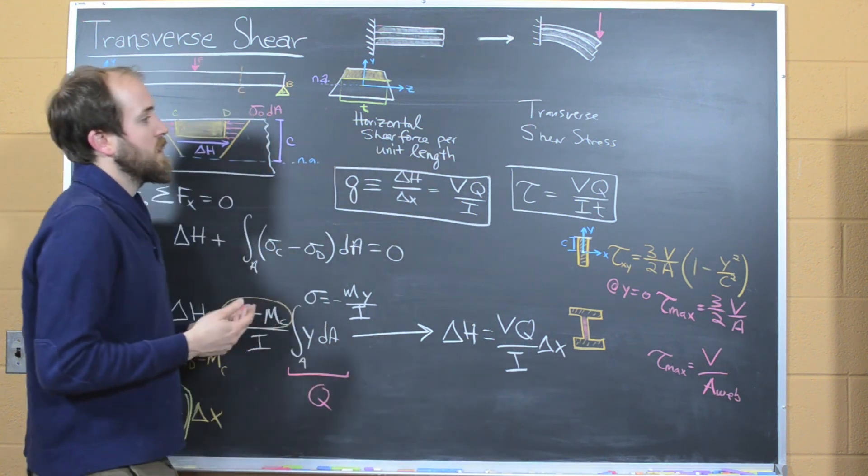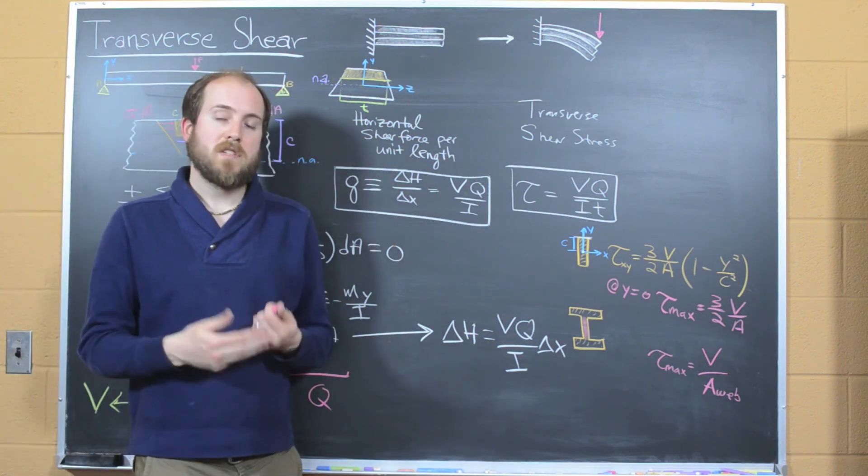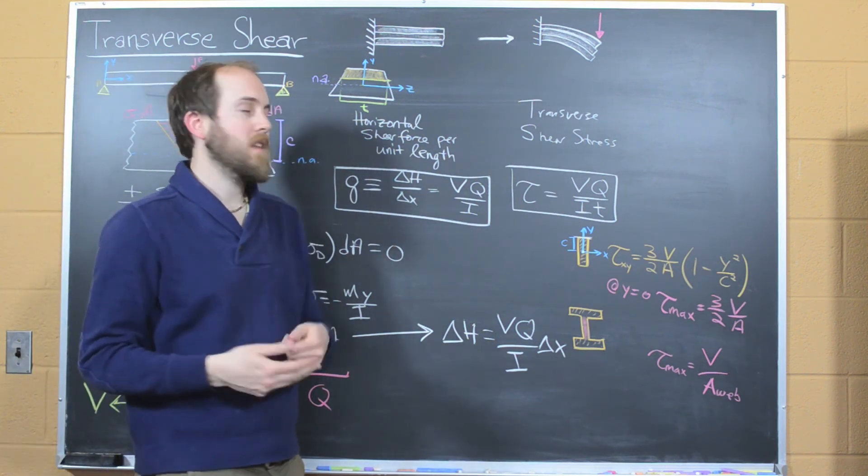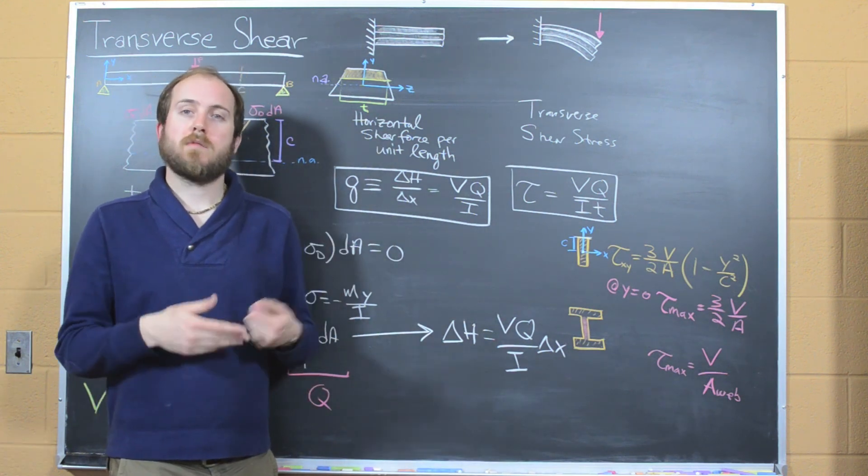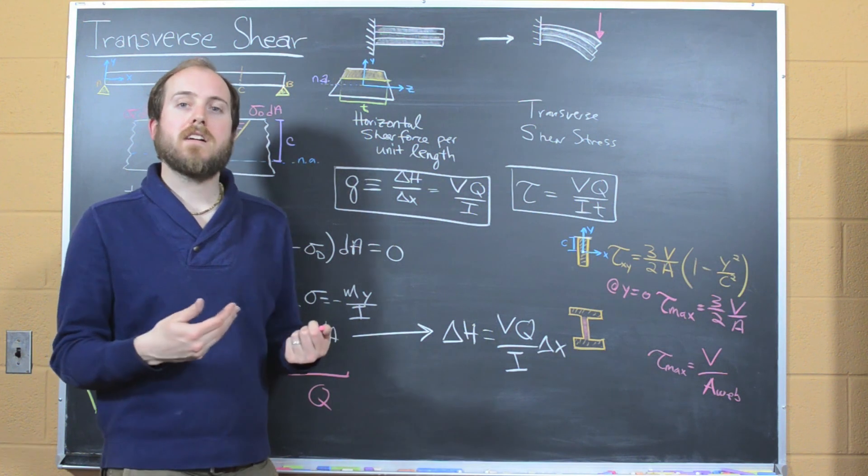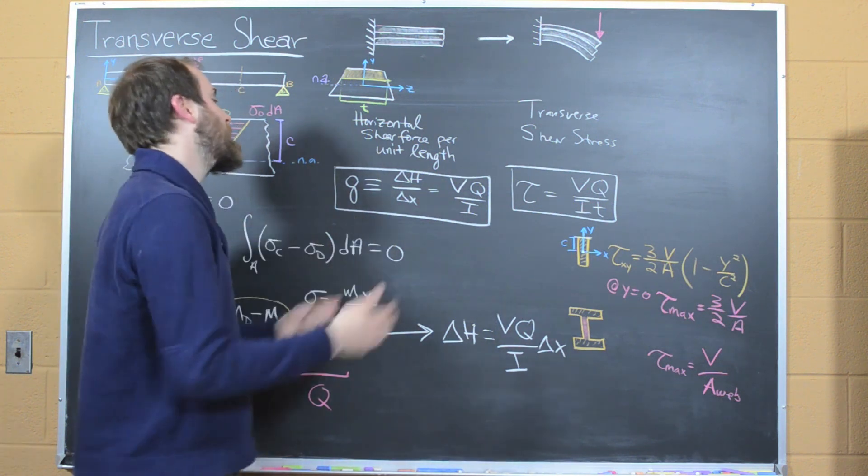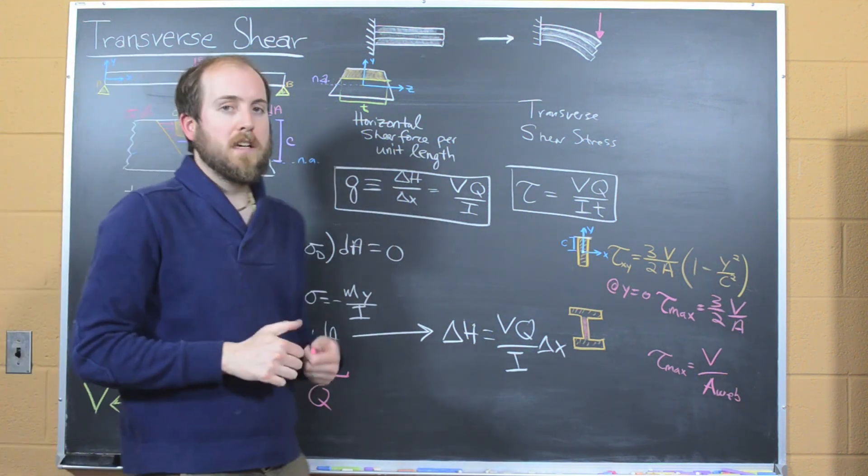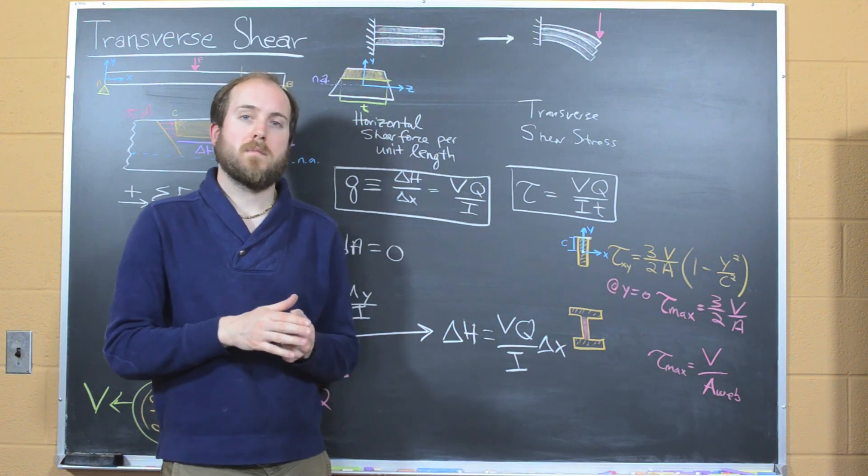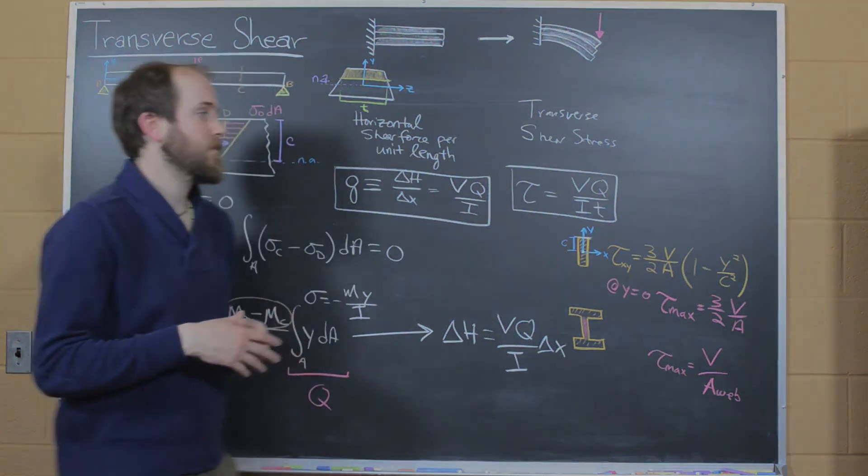So this is our transverse shear stress. And the idea is we want to be able to determine what the maximum shear stress is within a structure, and then be able to compare that to the maximum allowable shear stress before failure occurs. That will tell us if the structure is going to fail due to shear. And then we can do the same calculation, calculate our normal stresses, using the calculation we learned in our previous lesson, and determine if the structure is going to fail due to exceeding the critical normal stress.